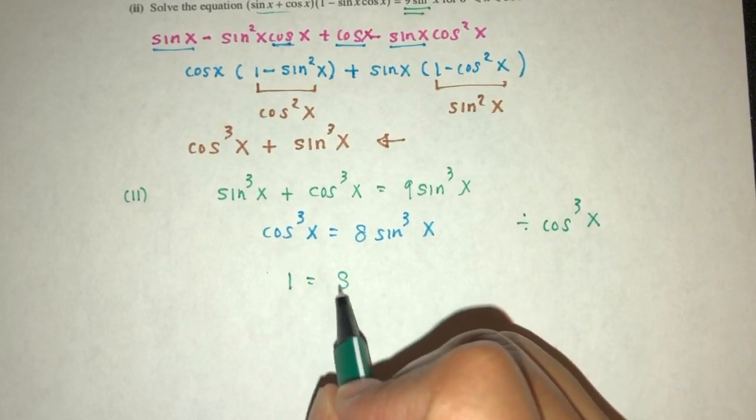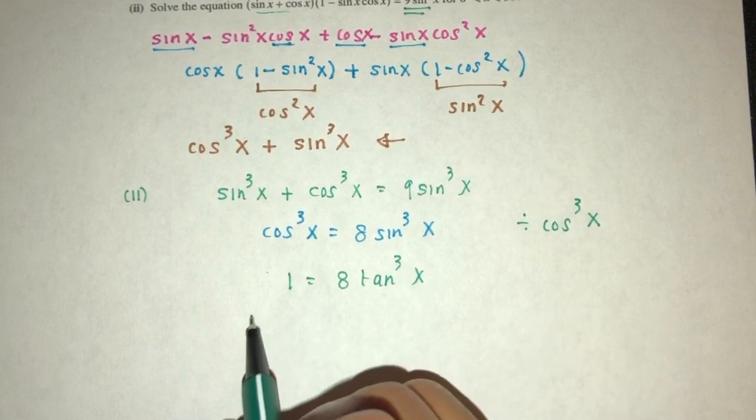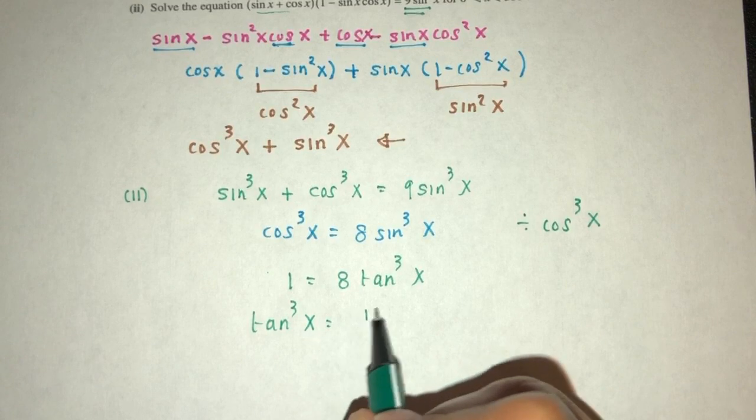this will become 1 equal to 8. When sin divided by cos, you will have tan. Tan³x. So tan³x as a subject now will be 1 over 8.